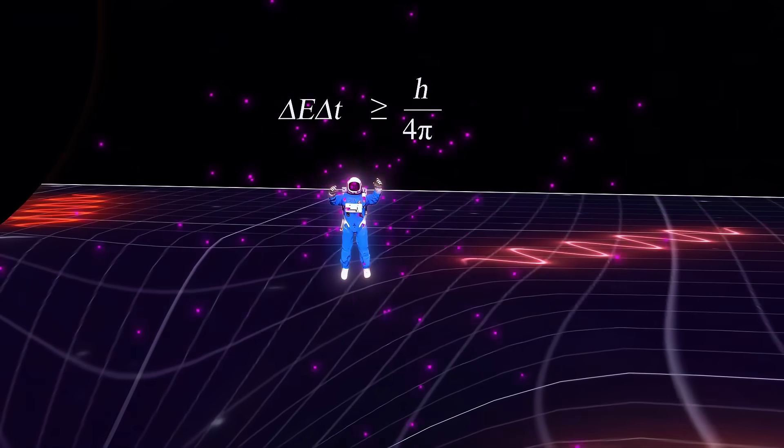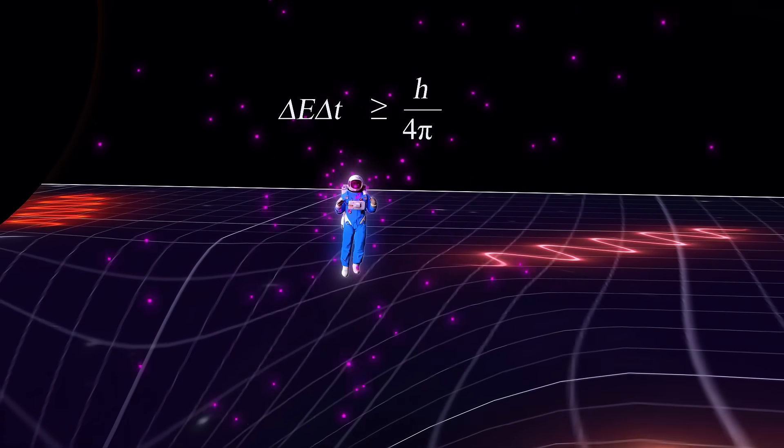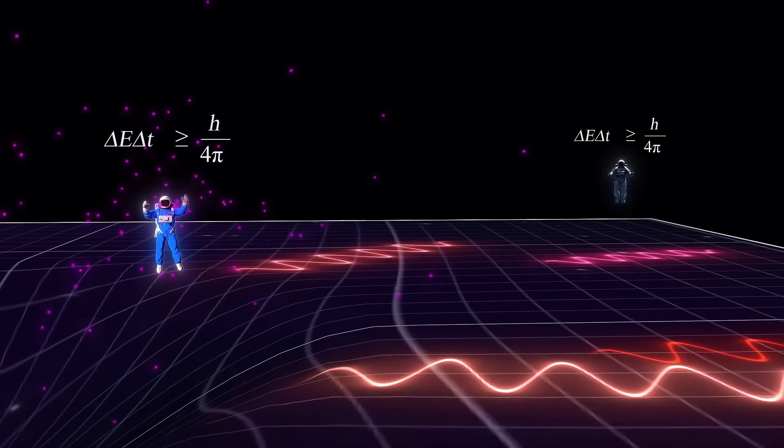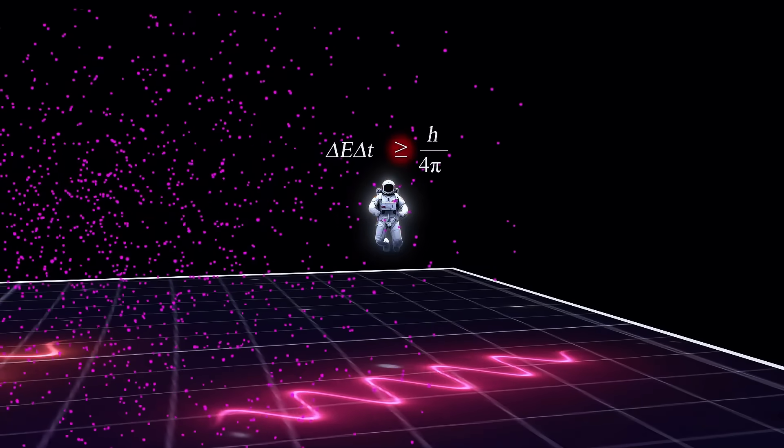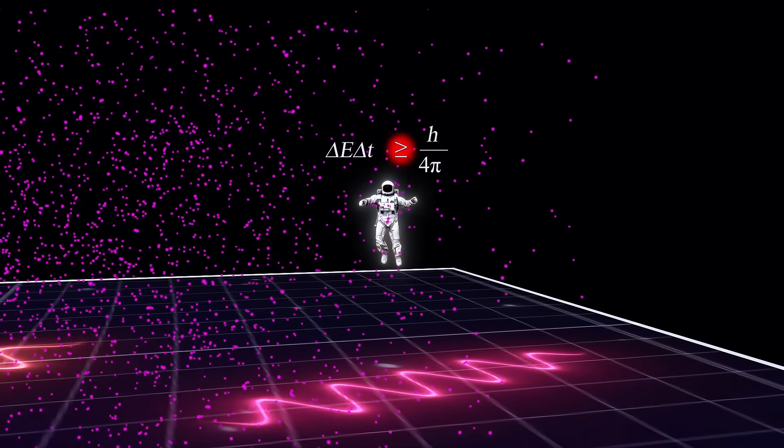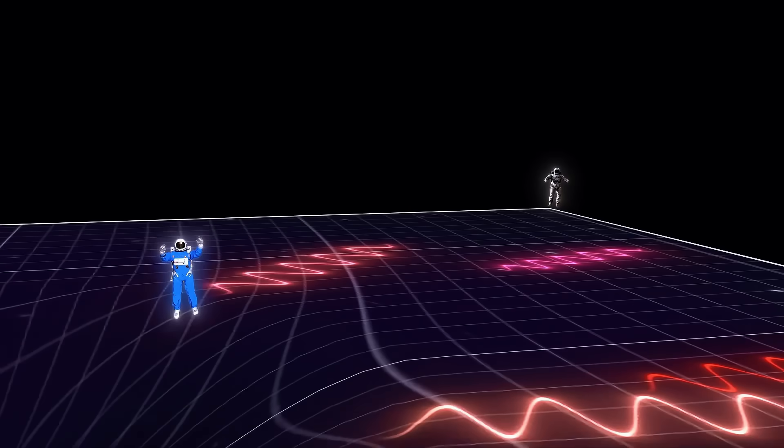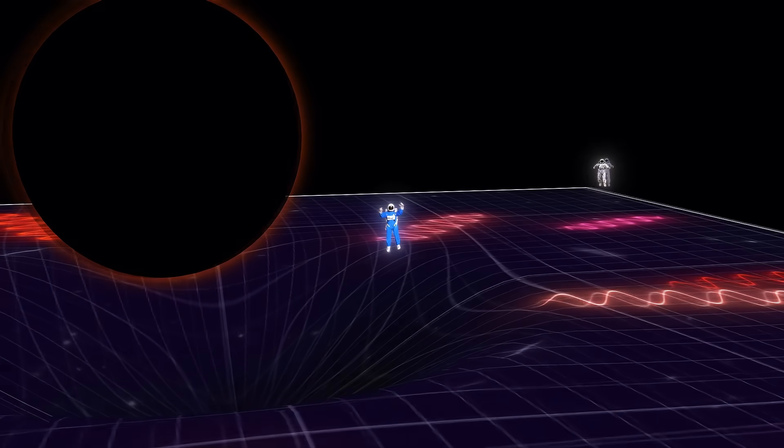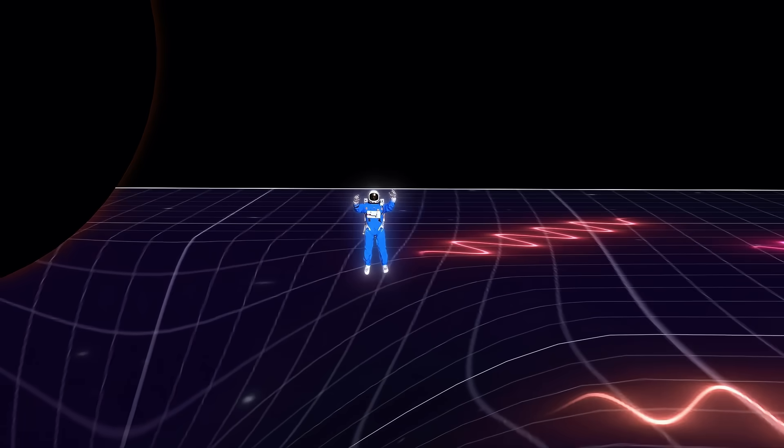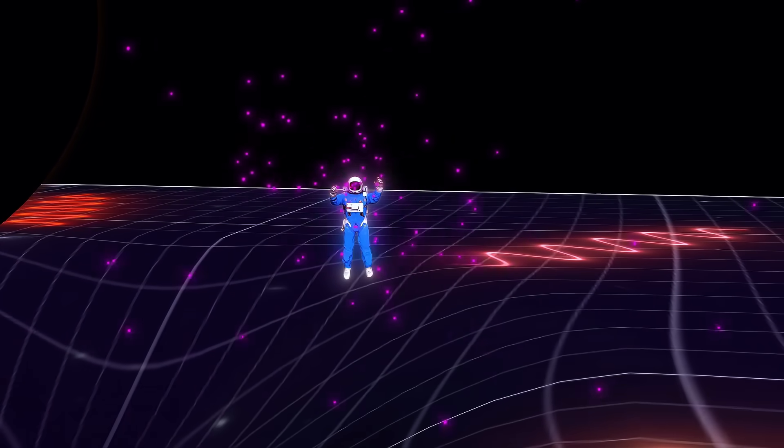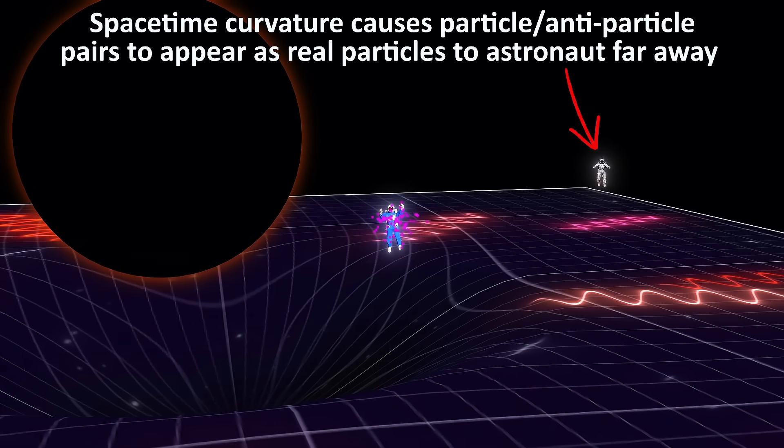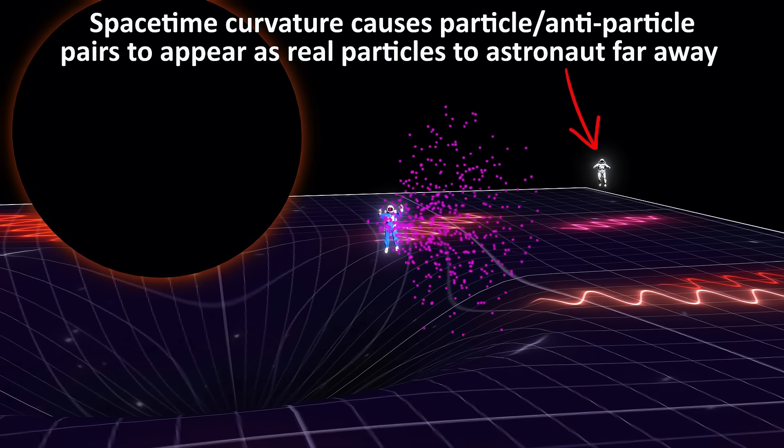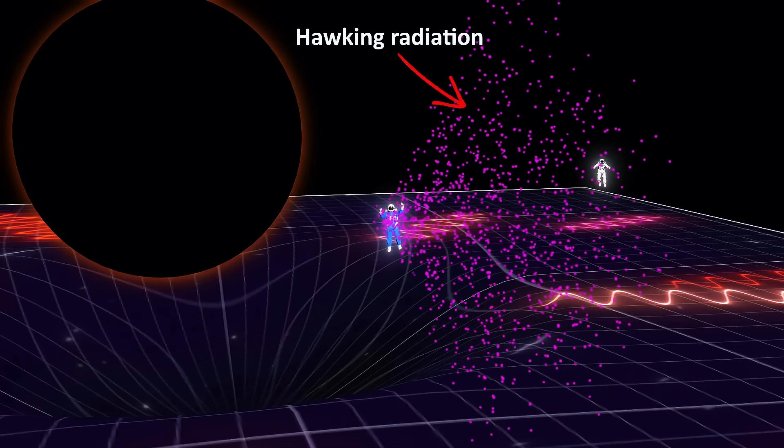The key insight is that near a black hole, what one observer describes as a vacuum state could look like a thermal bath of particles to another observer, far from the black hole. This discrepancy arises because the spacetime curvature near the event horizon causes the particle-antiparticle pairs that would normally annihilate to appear as real particles, some of which can escape into space. And those particles that escape into space, that's Hawking radiation.